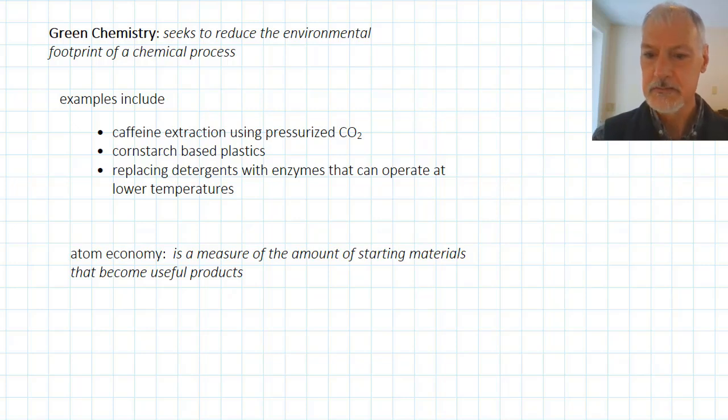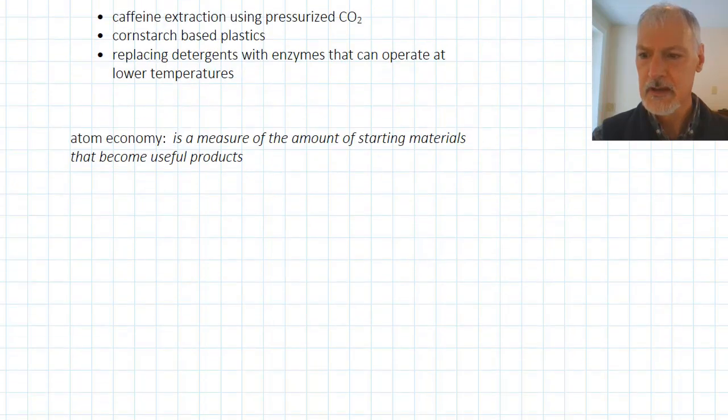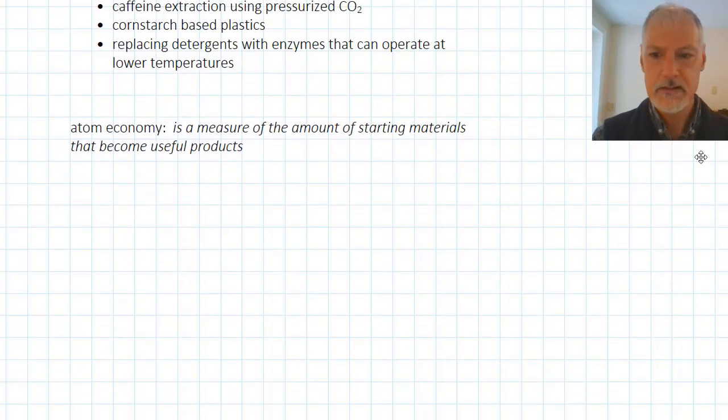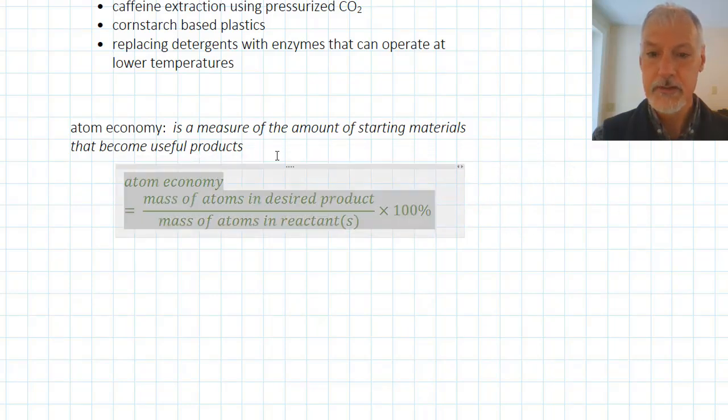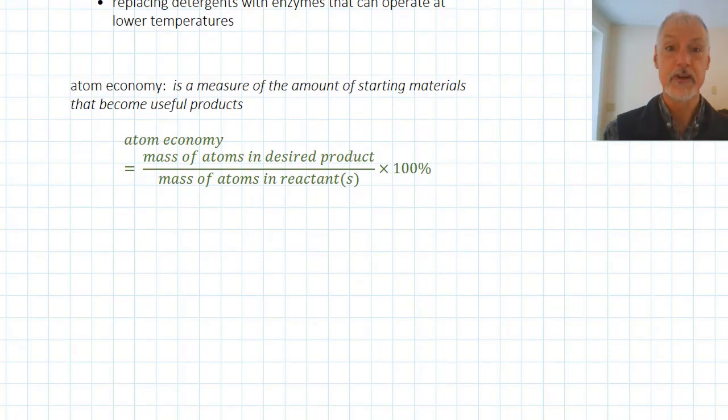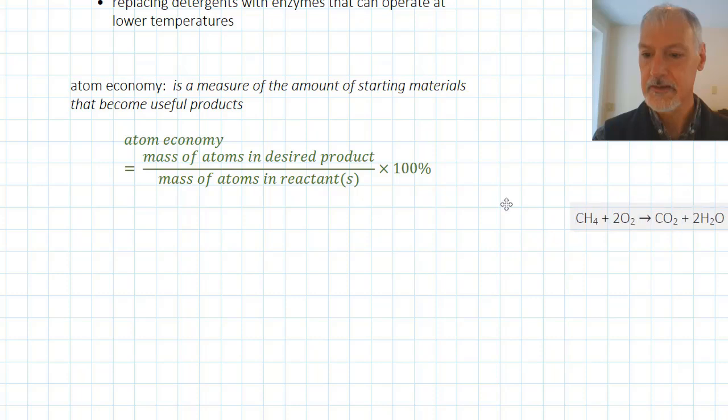A final aspect of green chemistry involves the selection of processes which show a high degree of atom economy. Now, we define atom economy, or at least can calculate it, by using this formula. We can look at the mass of the atoms in our desired product and compare them to the mass of our reactants.